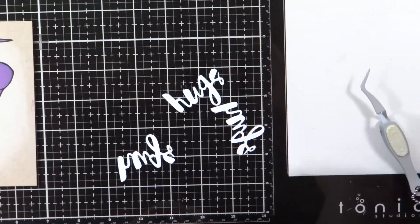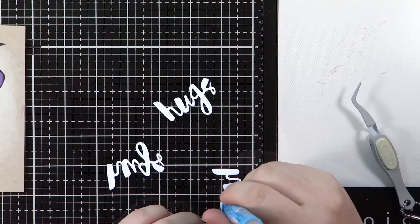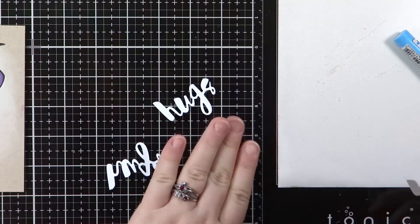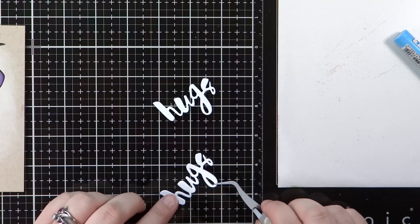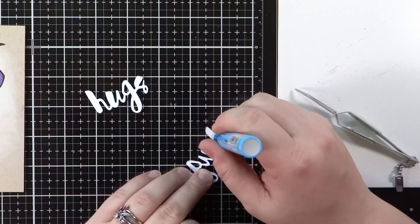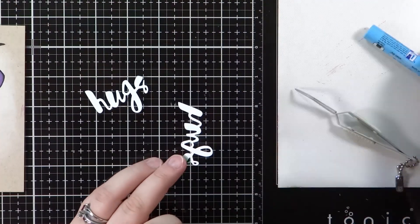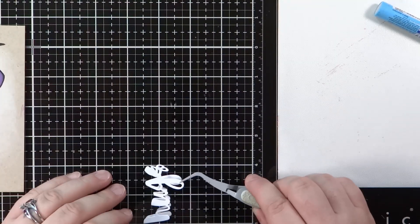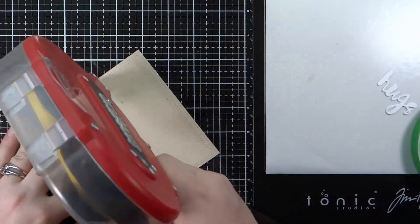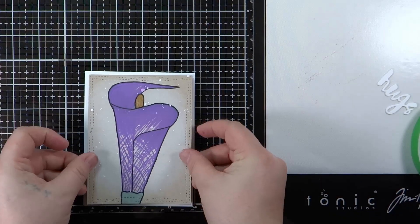For the last card I'm using a Simon Says Stamp Hugs die. And I cut it out three times. I'd cut all these off camera to save some time because this video was already pretty long with three different cards to show. But I glued all three layers together using my Zig two-way glue pen. And I'm attaching this one to a Neenah Solar White card base and adhering the hugs die in the same place basically where the other ones were.